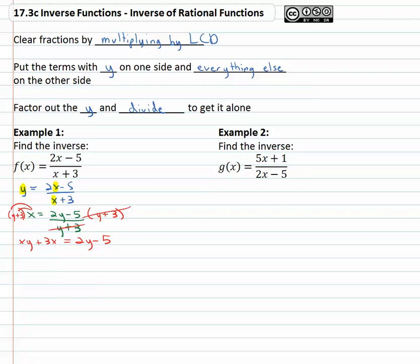Now that we've cleared the fraction, we'll put the terms with y on one side and everything else on the other side. So let's subtract 2y from both sides. That will move the y's all to the left and we'll subtract 3x from both sides. That will move everything without a y to the other side.